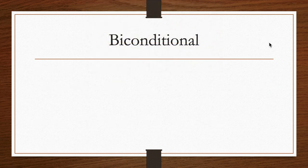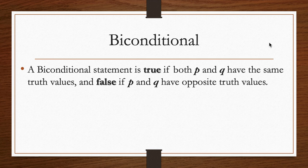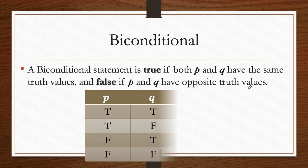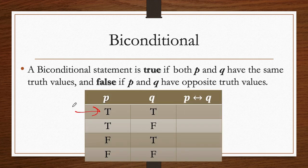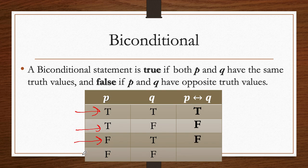Let's proceed to the biconditional or bi-implication. The biconditional is true if both propositions have the same truth values, and false if they have different truth values. So: T↔T is true (same), T↔F is false (different), F↔T is false (different), F↔F is true (same). That's how we evaluate biconditionals.